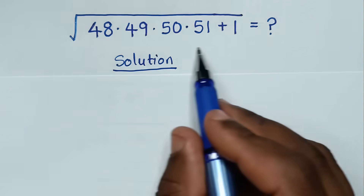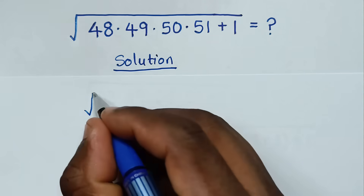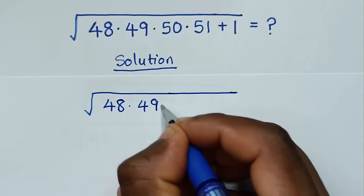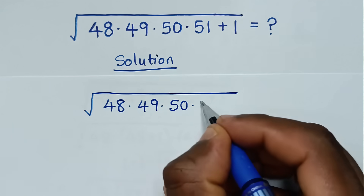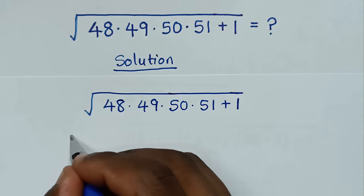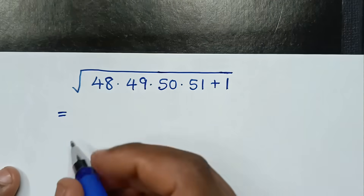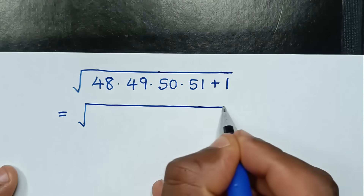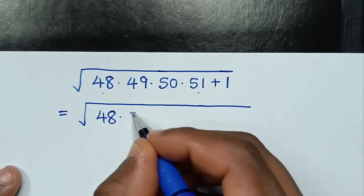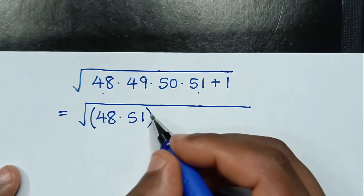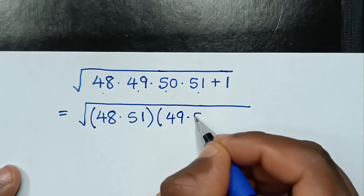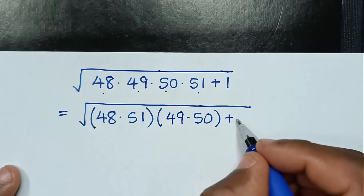To solve this problem in another method, from our problem square root of 48 times 49 times 50 times 51 plus 1, we take 48 times 51 together and 49 times 50 together, giving square root of (48 times 51) times (49 times 50) plus 1.